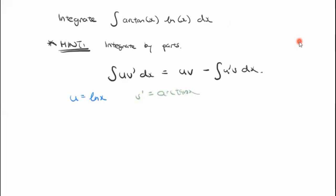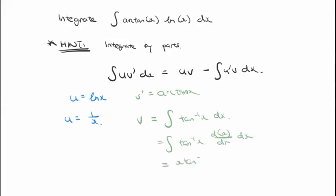Letting u = ln(x) and v' = arctan(x), we get u' = 1/x, and v would be the integral of inverse tan of x. As mentioned, that integral itself requires integration by parts. Hopefully this is an integral you're already familiar with, but we'll quickly do it here: integral of arctan(x), letting v' = 1, so v = x, giving x·arctan(x) minus the integral of x times the derivative of arctan(x).